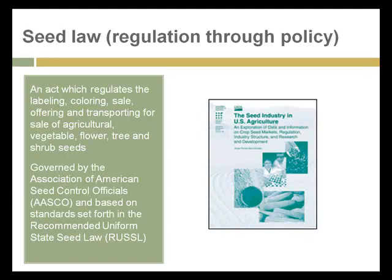Seed laws are acts which regulate the labeling, coloring, sale, offering, and transportation for sale of agricultural seeds — called agricultural, vegetable, and flower seeds — and they're governed by an Association of Seed Control Officers based on standards set forth in the Uniform State Seed Law. Federal law passed by the US Department of Agriculture is implemented by the states through this Uniform State Seed Law, and each state has its own regulations and governing organizations with respect to seeds. It's a very highly regulated industry, and it should be, because careless use or labeling of seeds can have big consequences for farmers and growers relying on the purity and viability of the seeds they purchase.